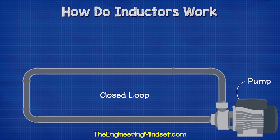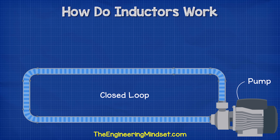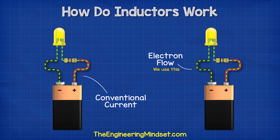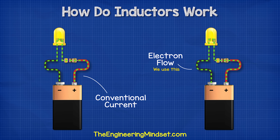When we first start the pump, the water is going to flow and it wants to get back to the pump as this is a closed loop. This is just like when electrons leave the battery — they flow and try to get back to the other side of the battery. By the way, in these animations I use electron flow, which is from negative to positive, but you might be used to seeing conventional flow which is from positive to negative. Just be aware of the two and which one we're using.